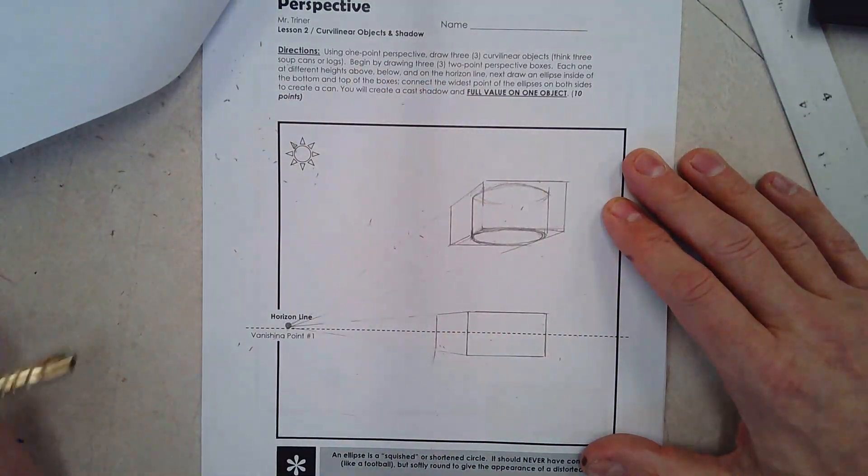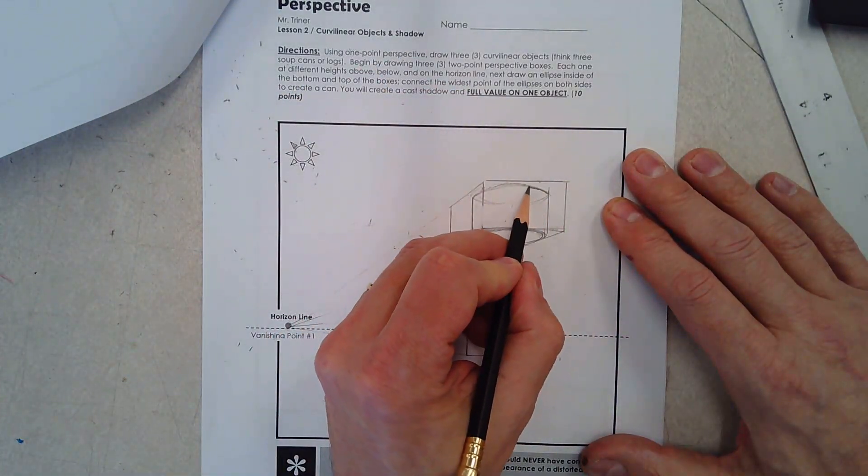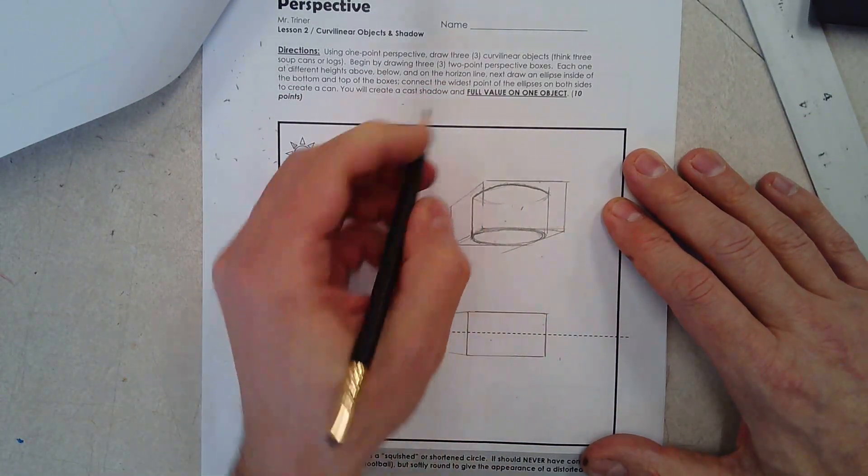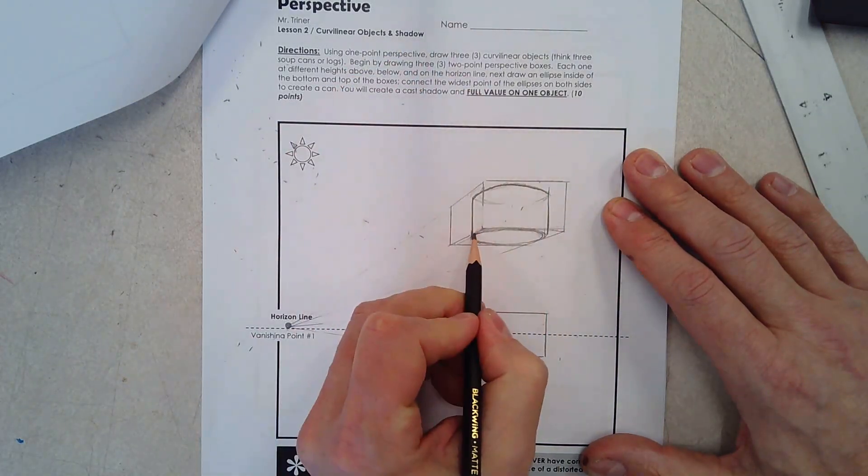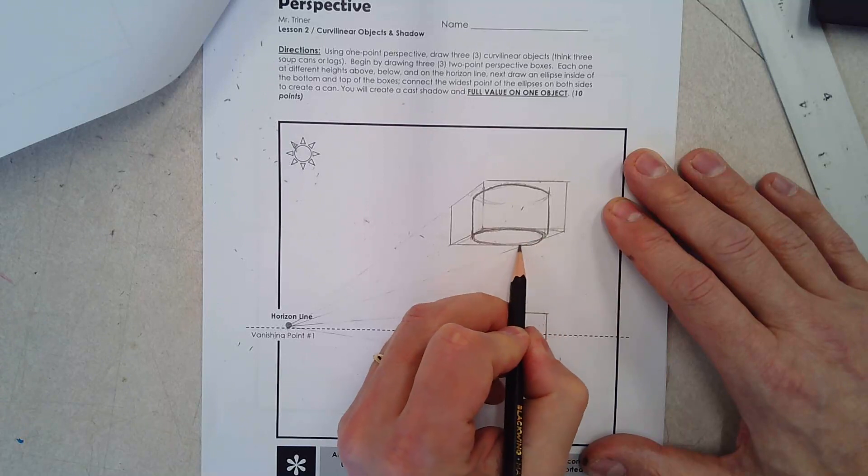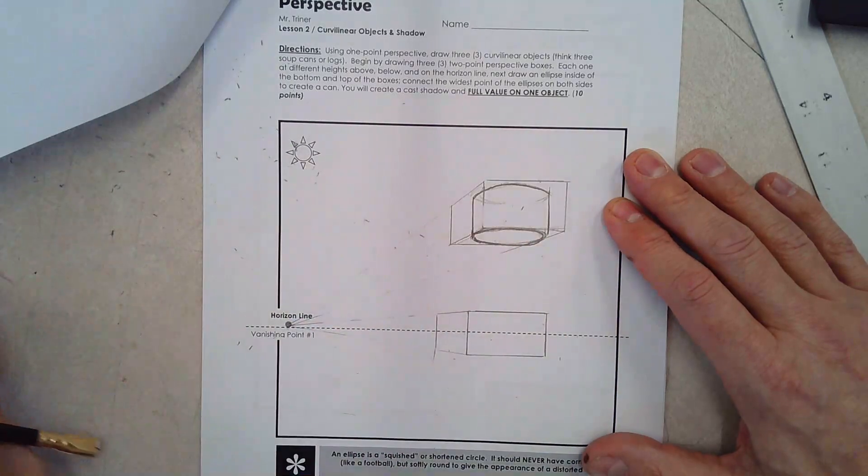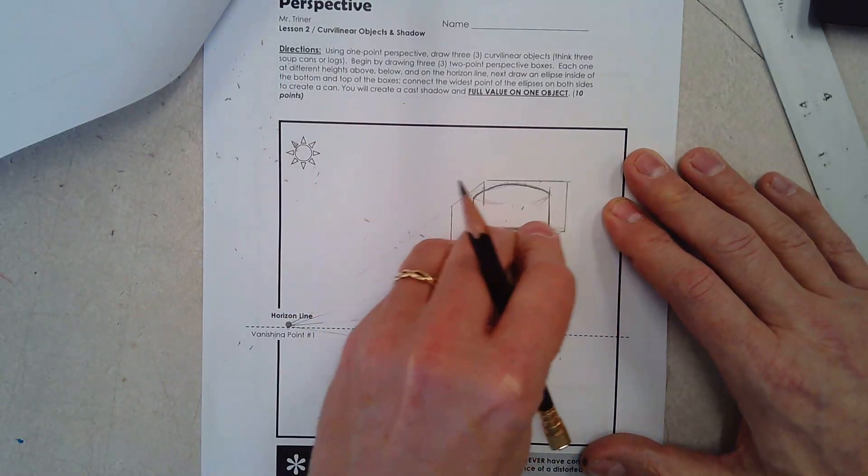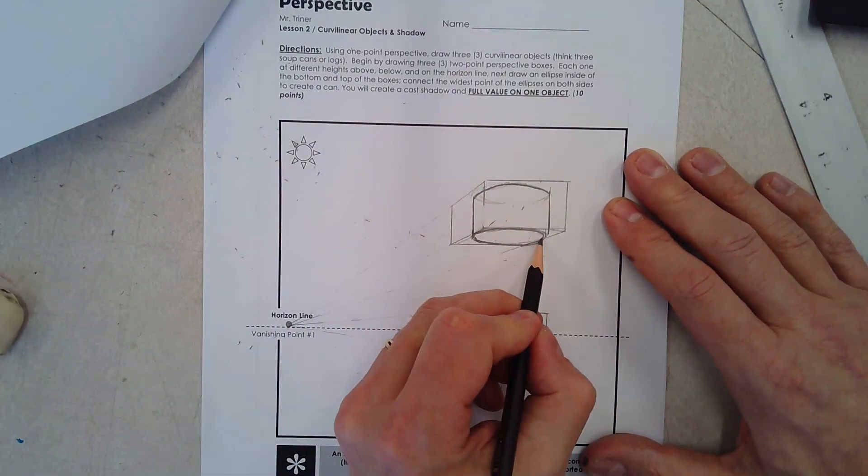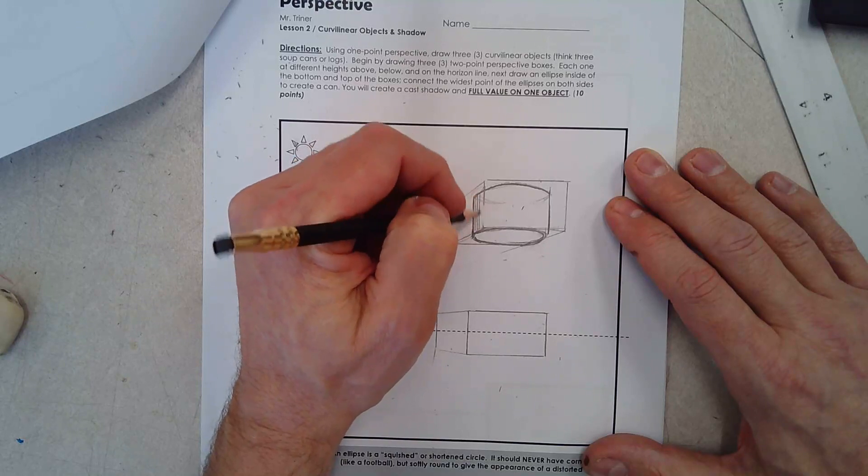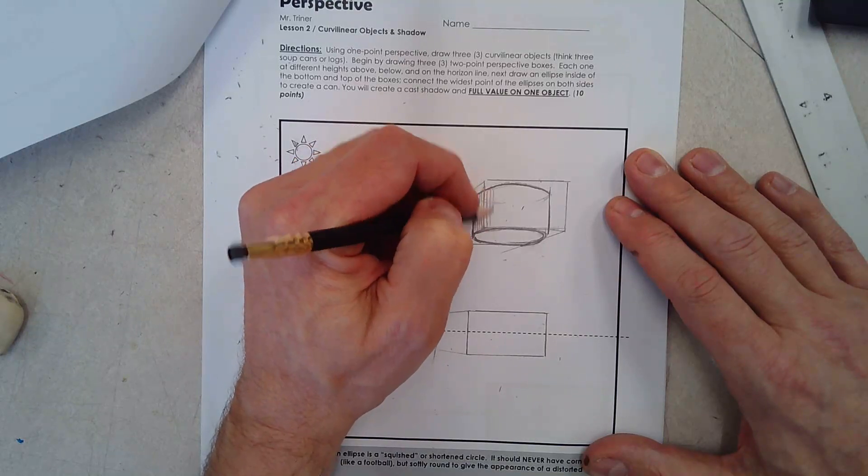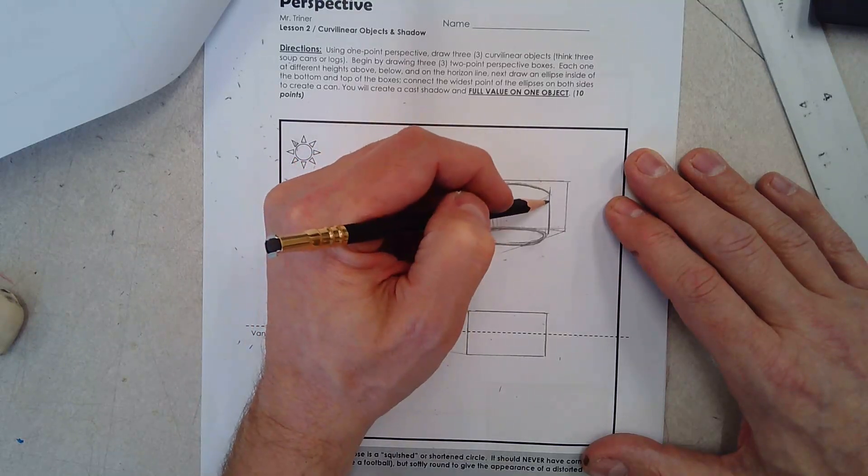So now if you look, I'm going to darken it so that you can see it on the video a little more clearly. You should be able to see what looks like a cylindrical object or a curvilinear object sitting in correct perspective. And you're going to probably have to tweak it a little bit. And again, to give it just a little bit more clarity, I'm going to put a few lines on here.